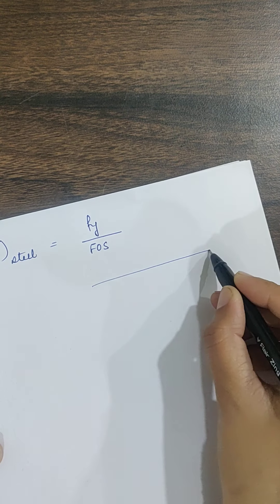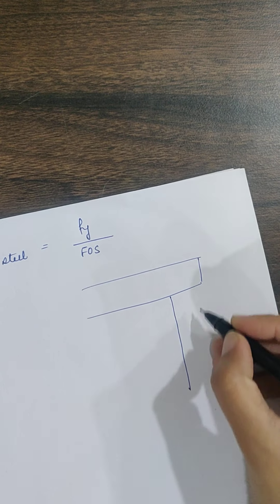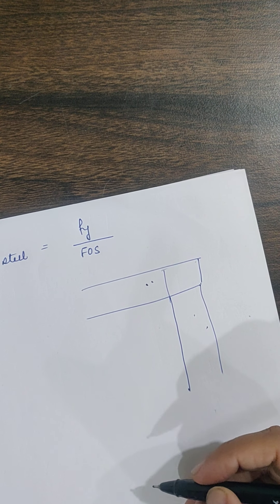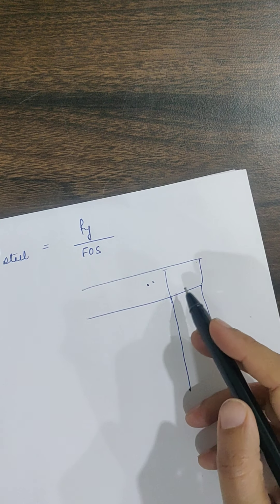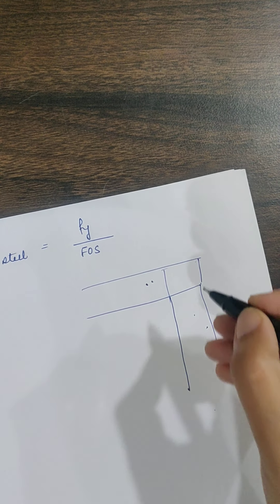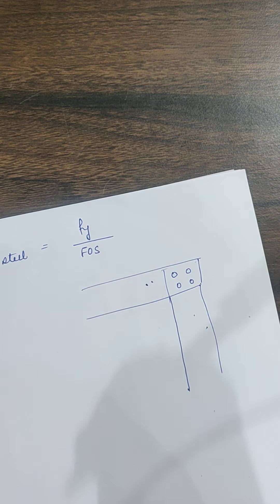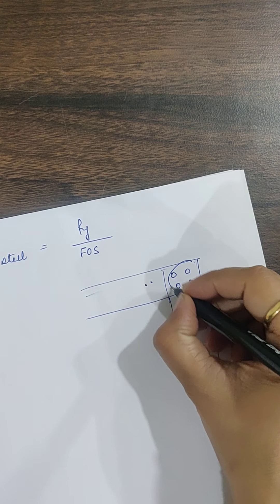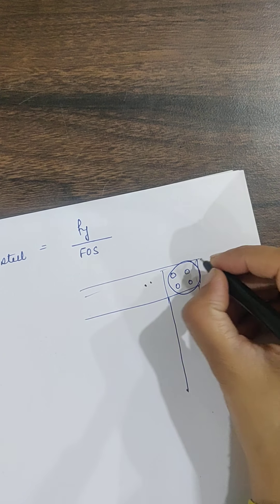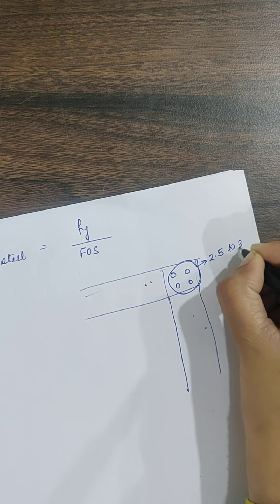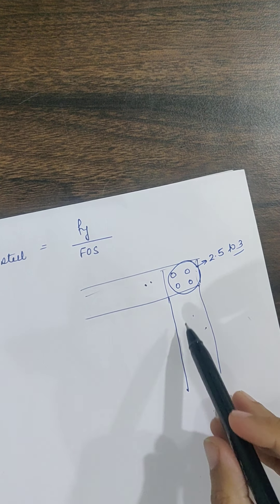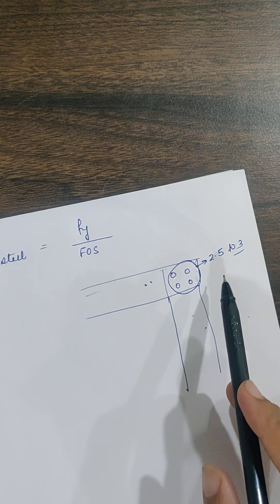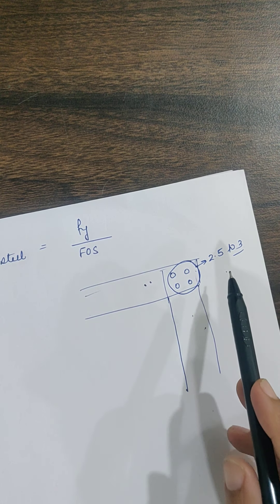Consider a steel beam connected to a steel column — they need to be connected using rivets or bolts. We need to design the member, the column, and also the connections. The maximum factor of safety is given on connections because if a connection fails, it leads to failure of more than one member. Failure of a connection is a more catastrophic kind of failure, so the code always gives the maximum factor of safety on connections.